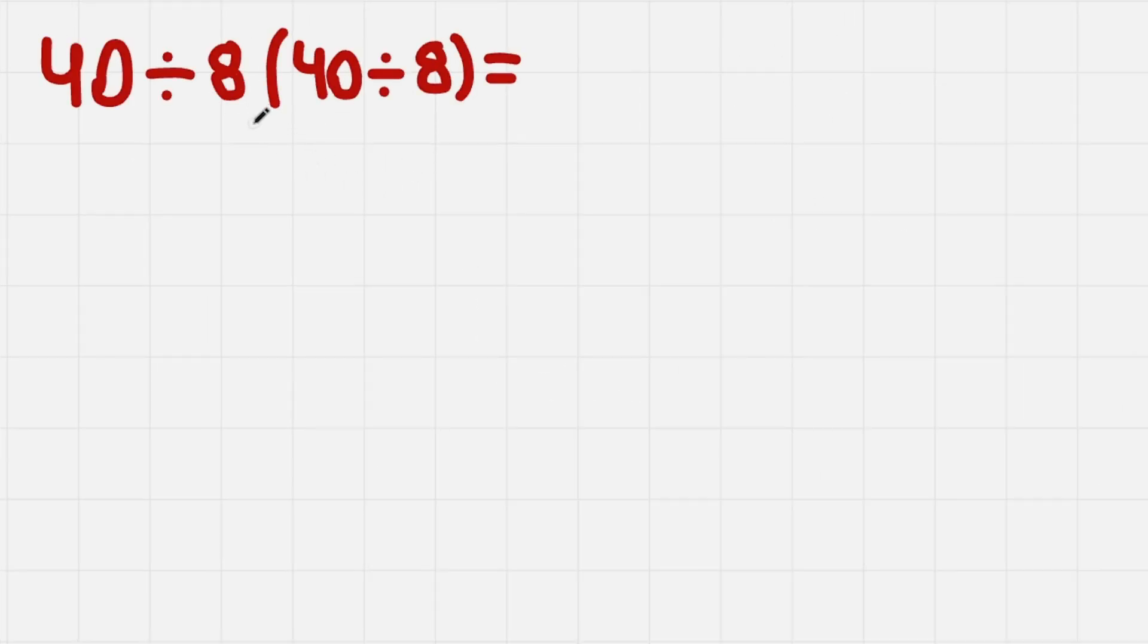So the first was parentheses. 40 divided by 8 gives us 5. And we are left with 40 divided by 8 and multiplied by 5.